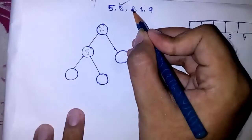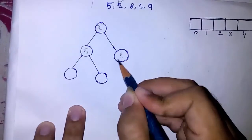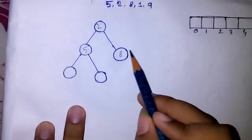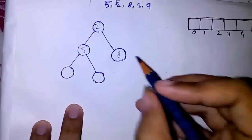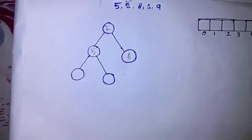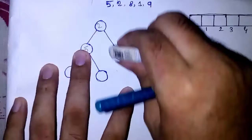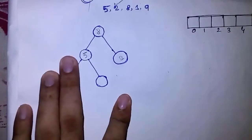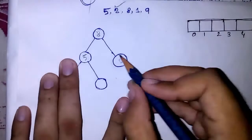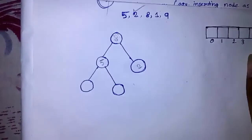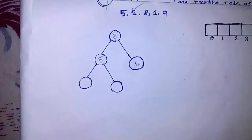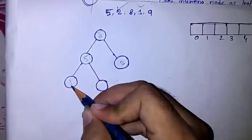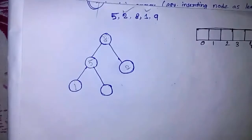Then I insert eight. Since the heap is a complete binary tree, I must insert it at the correct position. I check eight against its parent and the heap property is not satisfied, so I swap those values. The pointer moves up and the heap property is now satisfied. Next I add one and compare — everything is fine, no heapify needed.